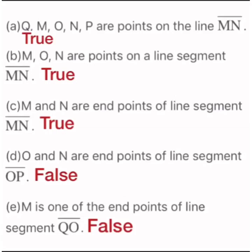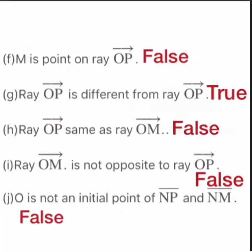Statement 5: M is one of the end points of line segment QO — FALSE, because M is the midpoint of QO, not an end point. The end points of QO are Q and O. Statement 6: M is a point on line OP — FALSE, because N is the point on line OP.